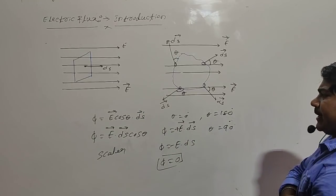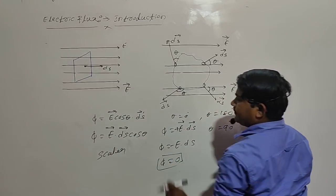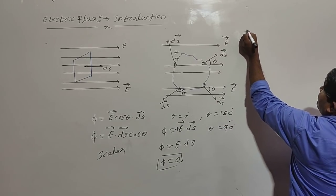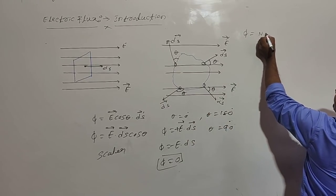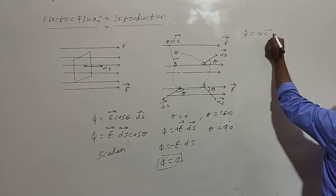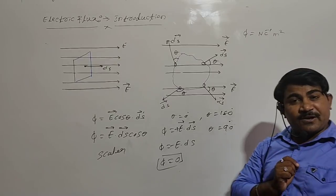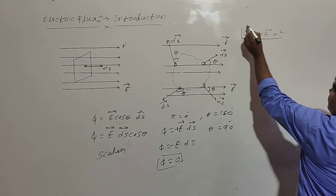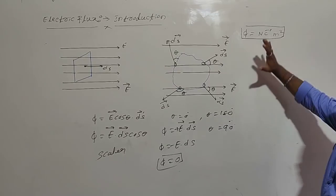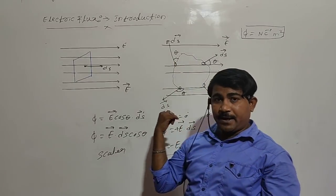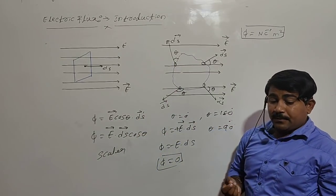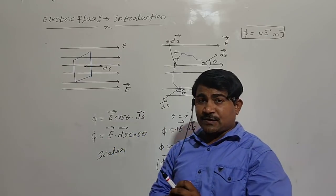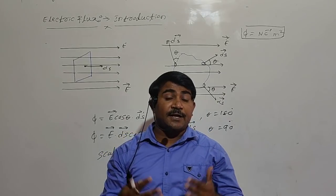The formula is: phi equal to E into dS, where E is the electric field intensity in newton per coulomb and dS is the area vector in meter square. The SI unit of electric flux is newton per coulomb meter square. This is the concept of electric flux and area vector. After this, we need to study about Gauss's Law — what is Gauss's Law and what are its applications. Thank you.